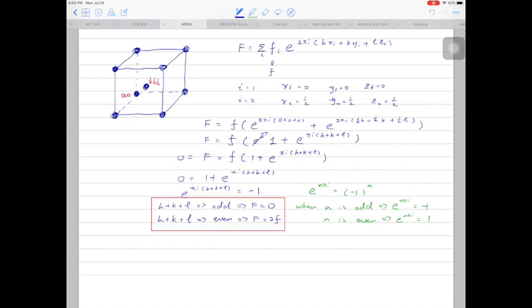You don't have to memorize those two conditions, but in many cases they can become very handy. If we are looking at a set of planes, for example say 001, because h plus k plus l is equal to 1, which is odd, then we know that set of planes is forbidden. We cannot see the diffraction spot from 001 planes in BCC metal.